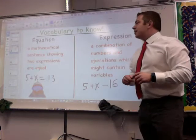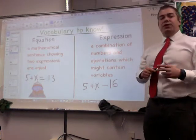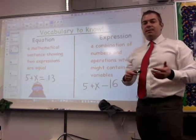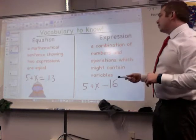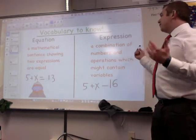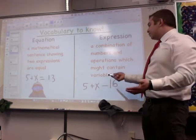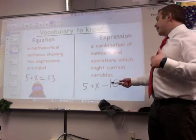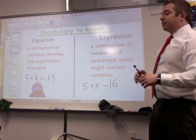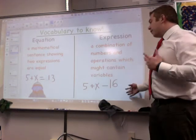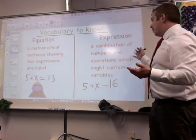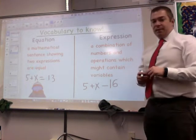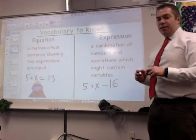Here's some vocabulary to know: equation and expression. We use those words all the time but what do they really mean? Let's start with expression. An expression is a combination of numbers and operations which might contain variables. So here's an expression: 5 plus x minus 16. So an expression can be just a number or a couple of numbers with operations, but there's no equal sign there.